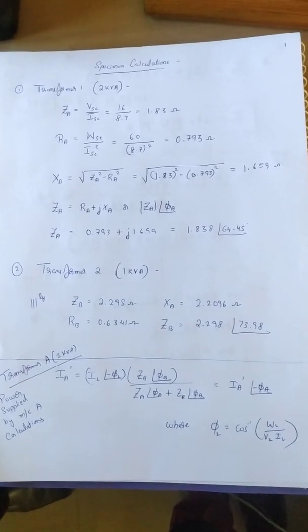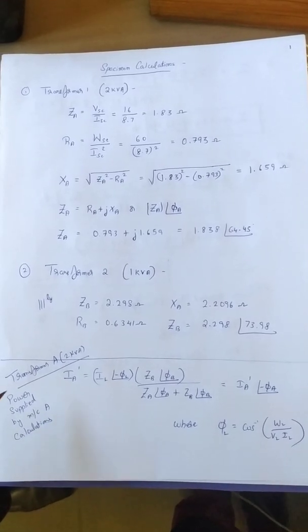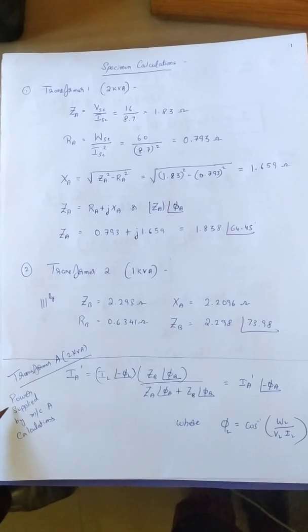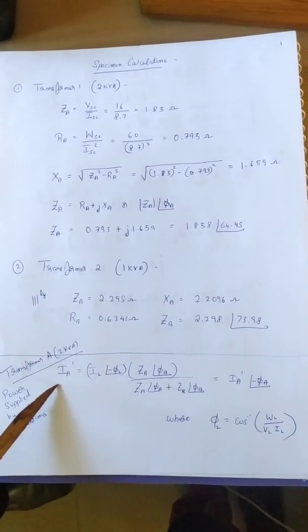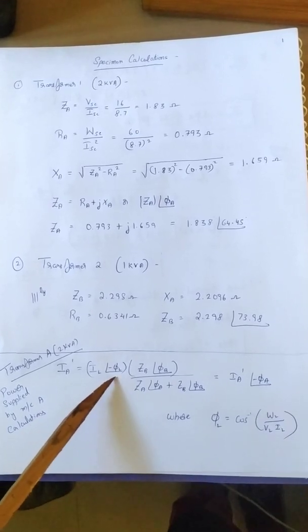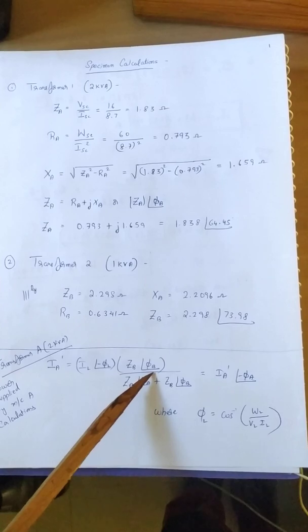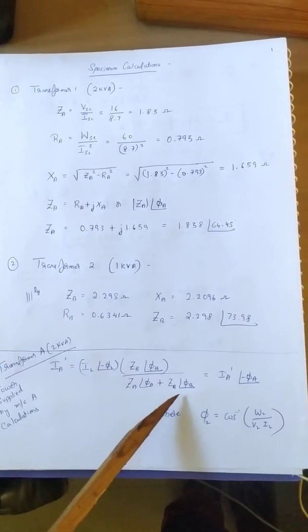Next we calculate the power supplied by both the machines. First we calculate for Transformer A which is of 2 kVA rating. For calculating the power supplied by machine A, we first find out I'A which is given by IL at an angle minus phi L, multiplied by ZB at an angle phi B, divided by ZA at an angle phi A plus ZB at an angle phi B.